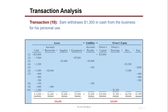Since all transactions were balanced, at the end we have balanced accounts where assets equal liabilities plus owner's equity. Thank you for watching. If you have any questions, please write them in the comments, and if you like the video, please subscribe to the channel.